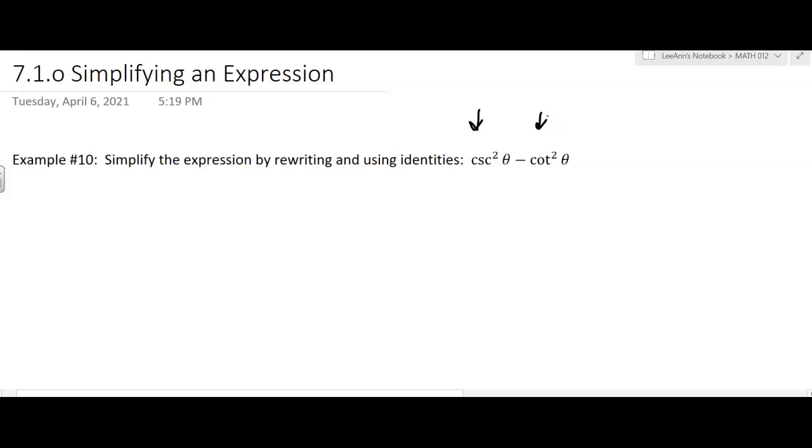But it's actually easier than that. We have an identity for cosecant squared. We know that 1 plus cotangent squared theta equals cosecant squared theta. So we're going to use this and place it in there for the cosecant squared.